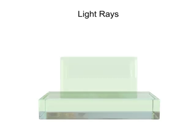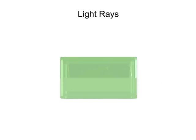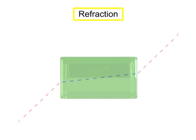If the light enters into a medium perpendicular to the surface, it passes straight through, but at a slower speed. However, if the light beam arrives at the medium surface at an angle, not only will its speed be reduced, but it will bend due to a process called refraction.